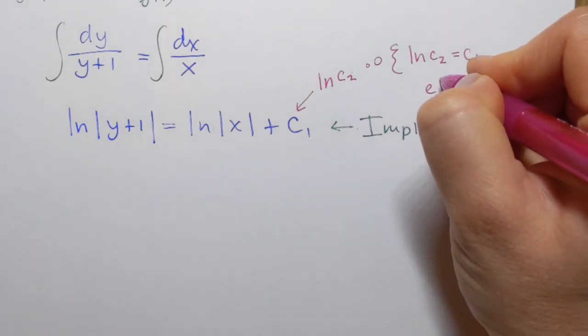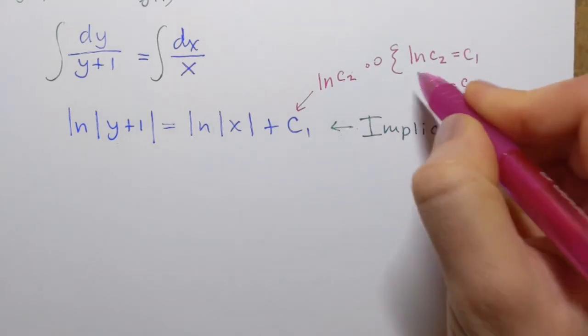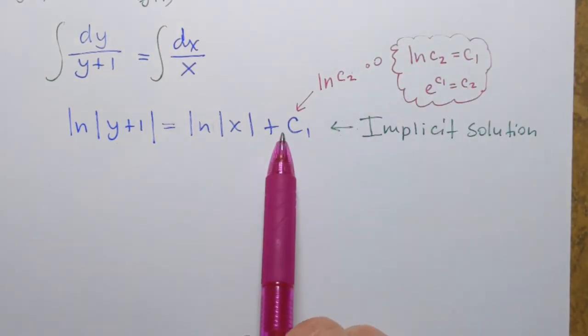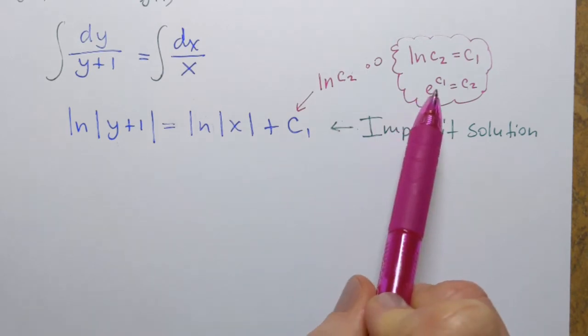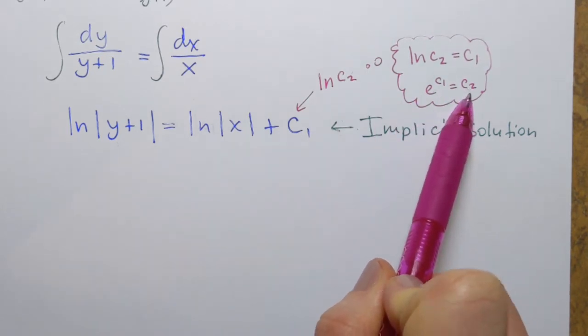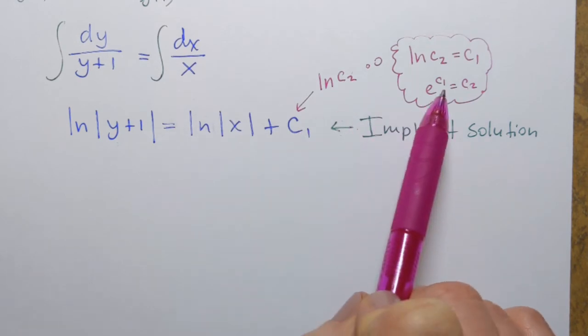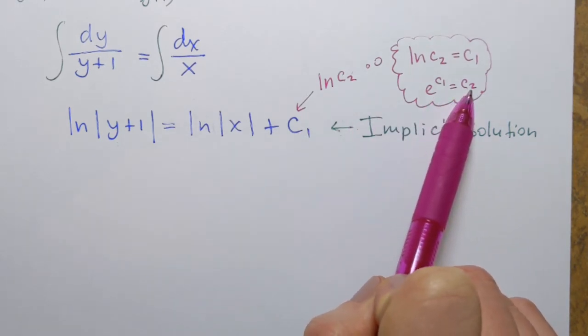And of course it's all in general. Since C1 is arbitrary constant while C2 also arbitrary constant but give me some specific value of C1 I can find you the appropriate C2.